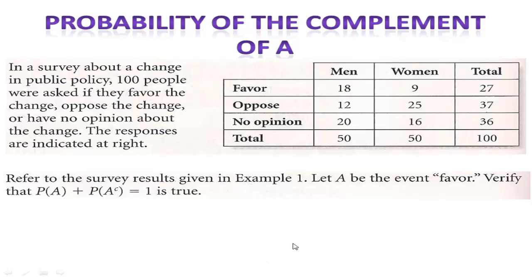For example here, we had worked with this problem before about the policy that the people had favored or opposed or had no opinion on. And what it's showing you here is that if you refer to the survey and you let A be the event favor, and I want to calculate that probability, that would be 27 out of 100 people favor it.